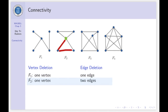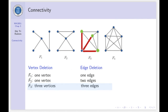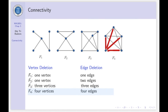What about graph F2? We need one vertex to be deleted to disconnect graph F2, but now we need two edges to disconnect this graph. For graph F3, we need three vertices or three edges to disconnect it. And for the last one, graph F4, we need four vertices or four edges to disconnect graph F4.